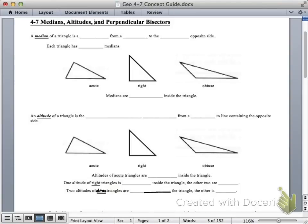Okay, bear with me as I try this out. This is the concept guide for 4-7, Medians, Altitudes, and Perpendicular Bisectors.